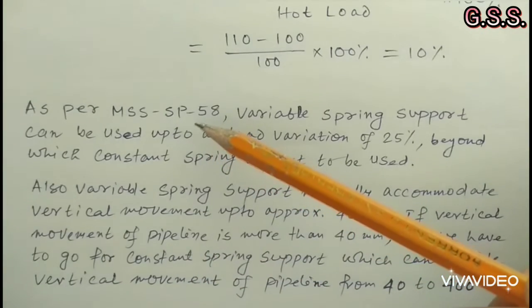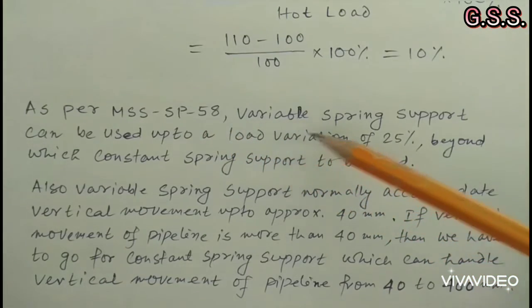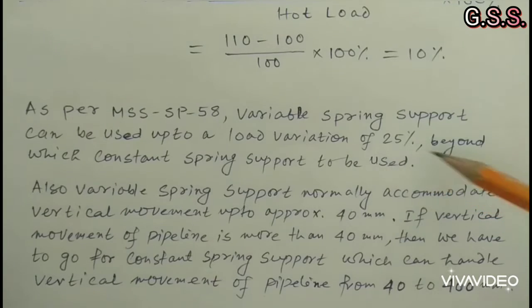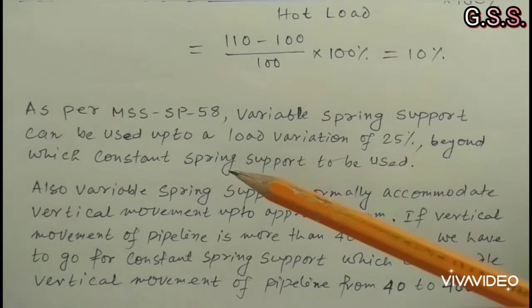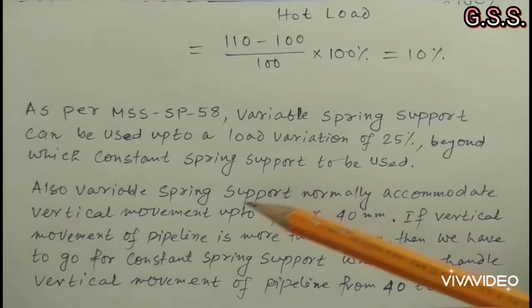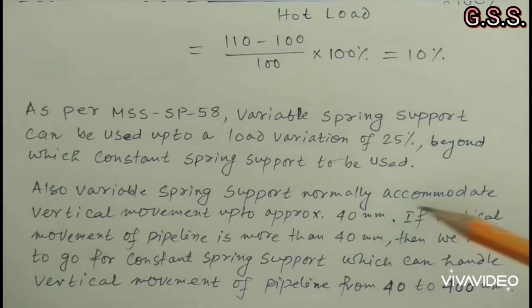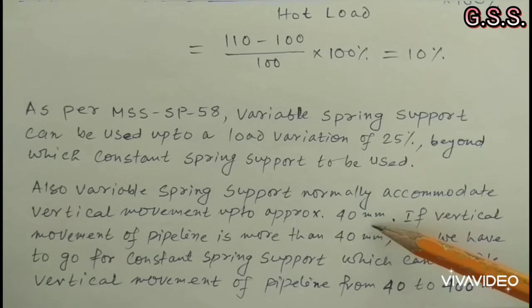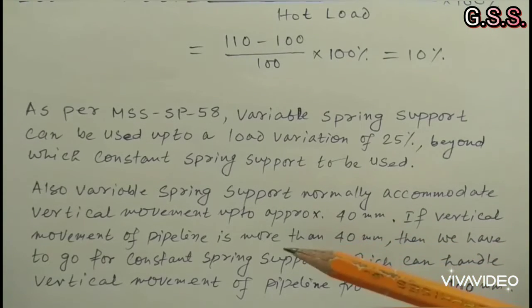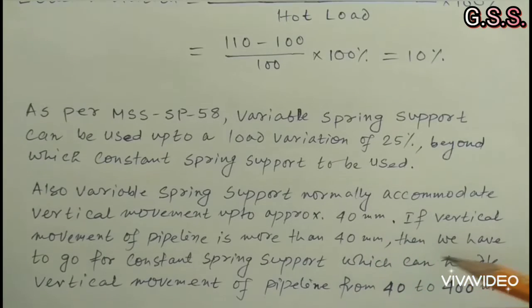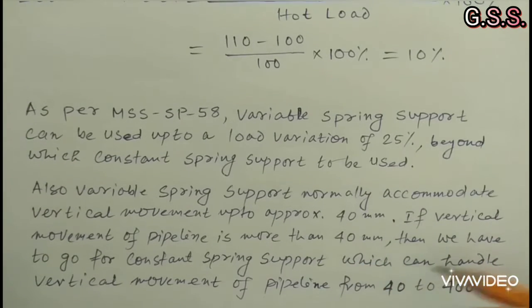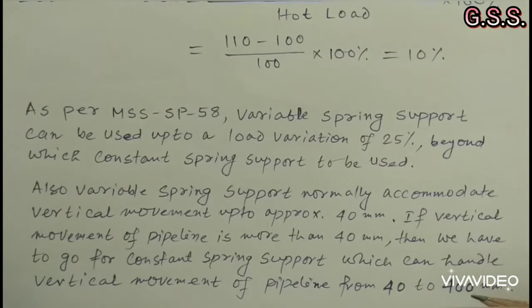As per MSS SP58, variable spring support can be used up to a load variation of 25%, beyond which constant spring support must be used. Variable spring support normally accommodates vertical movement up to approximately 40 mm. If vertical movement of the pipeline exceeds 40 mm, a constant spring support must be used, which can handle vertical movement from 40 to 400 mm.